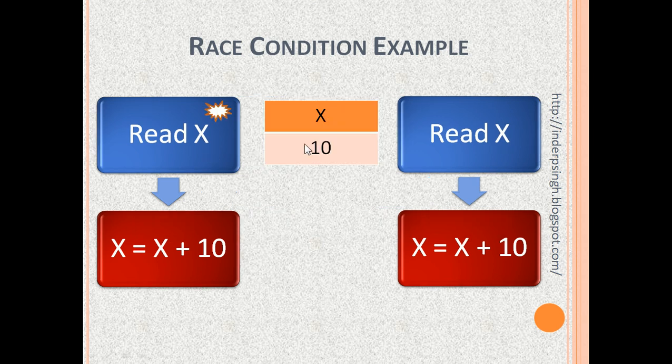So, x is initially 10, but the first process is in progress and the second process starts. Now, the second process also reads x is 10.